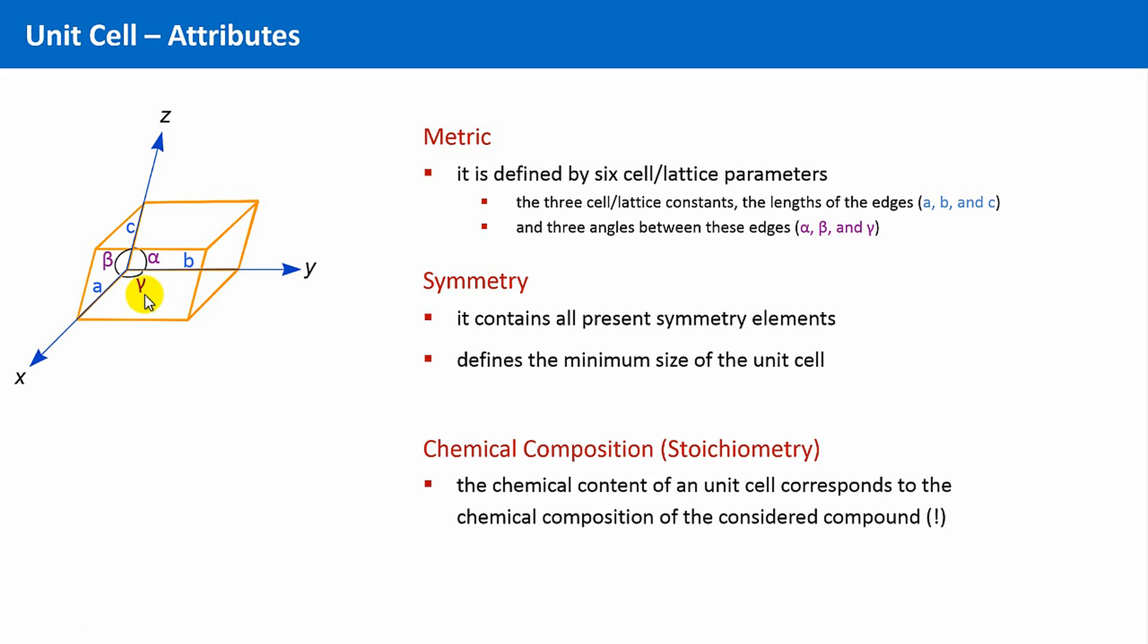The chemical content of a unit cell corresponds to the chemical composition of the considered crystalline compound. Assume, for instance, our crystal is composed of water, H2O, then the ratio of the chemical elements hydrogen to oxygen is 2 to 1. And this must be true for the unit cell of the crystal as well.